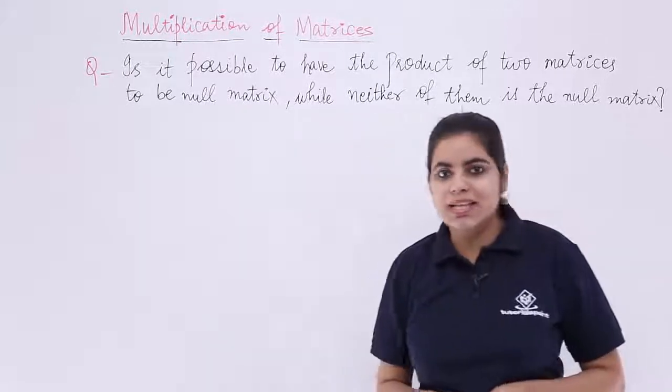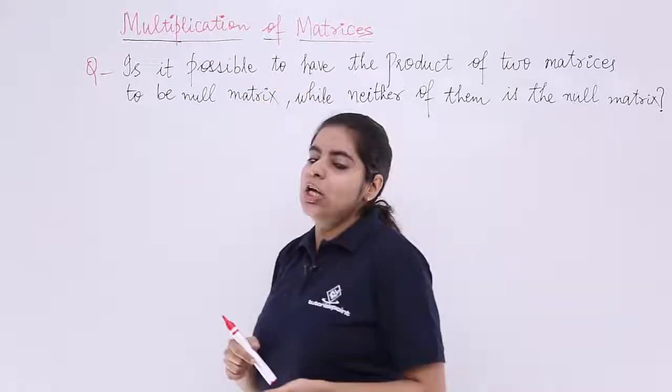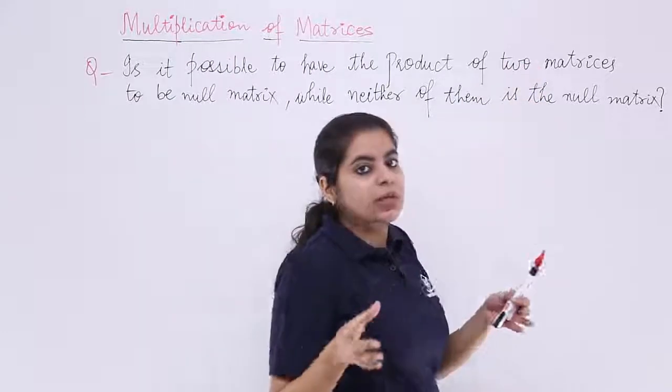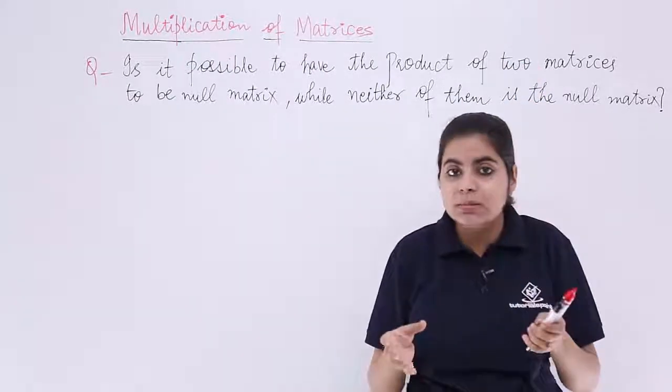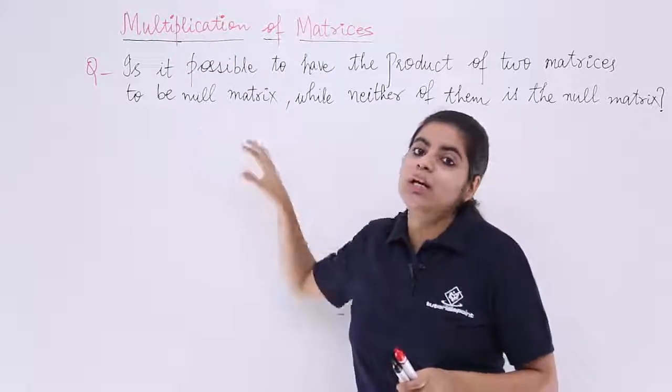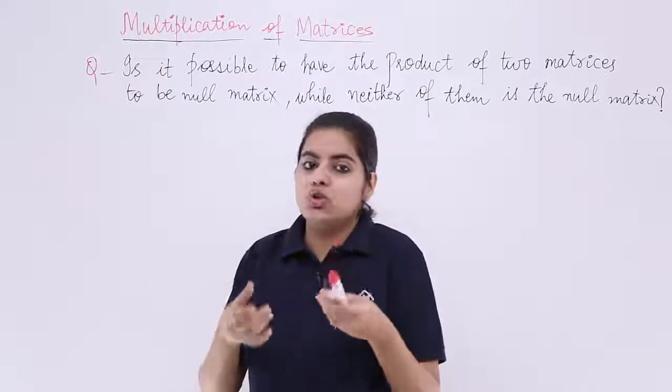The question is: is it possible to have the product of two matrices - that means there will be two matrices - is it possible to take the product of those matrices and the product should be a null matrix? That means the product of two matrices should be a zero matrix.